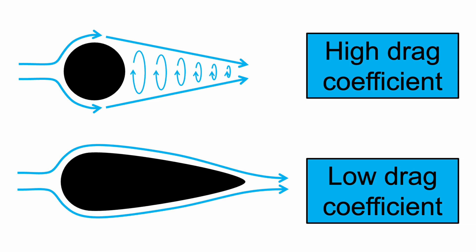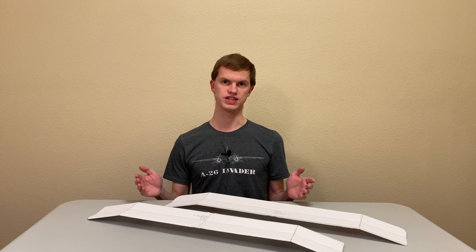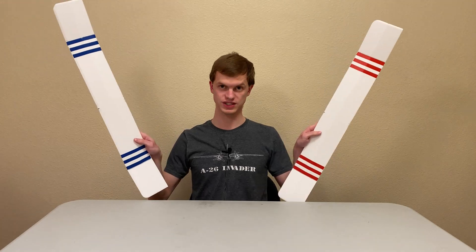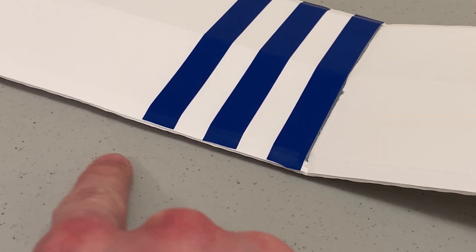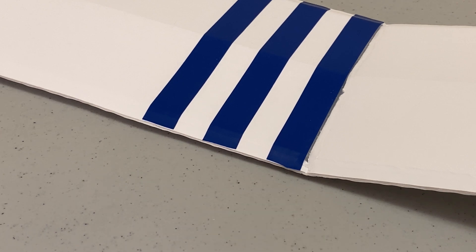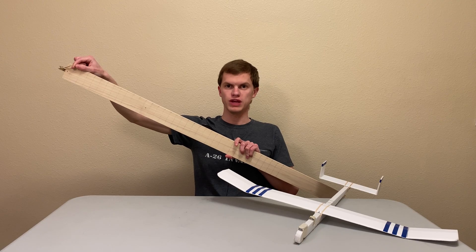Less streamlined objects have greater drag coefficients, while more streamlined objects have smaller ones. The drag coefficient is one of the most important factors determining how far your planes can fly. To demonstrate this, we compare two wings: one with blue stripes that has been streamlined by tapering the leading and trailing edges — giving it a small drag coefficient — and one with red stripes that has blunt edges and therefore a greater drag coefficient.